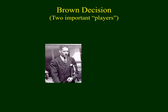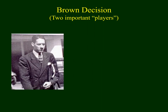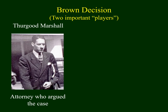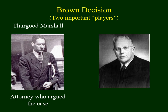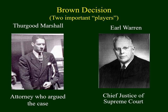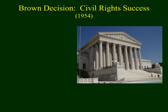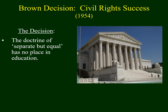Two important individuals shaped this decision, eventually handed down by the Supreme Court. On the left, we see Thurgood Marshall, an attorney who worked for the NAACP. He worked on behalf of the family and tried to fight in favor of integration of schools. On the right, we see Earl Warren, the Chief Justice of the United States Supreme Court, who worked to overturn segregation in schools. In 1954, the Supreme Court declared that the doctrine of separate but equal had no business in education, and therefore segregation in schools was outlawed.